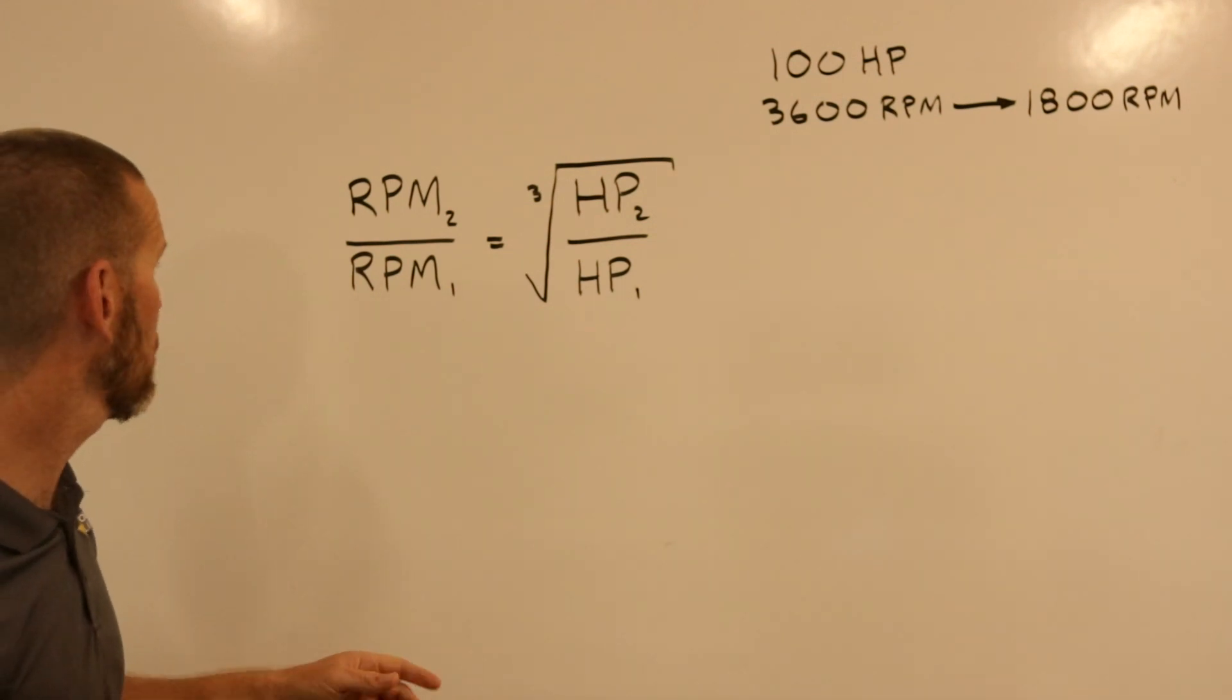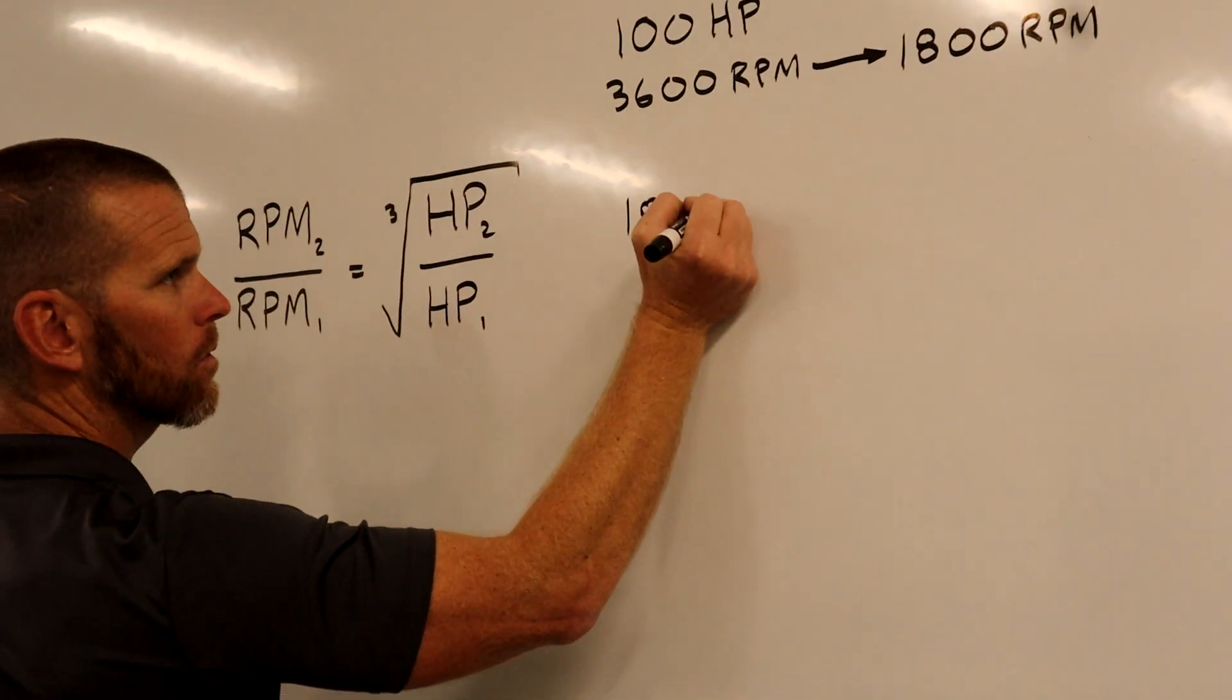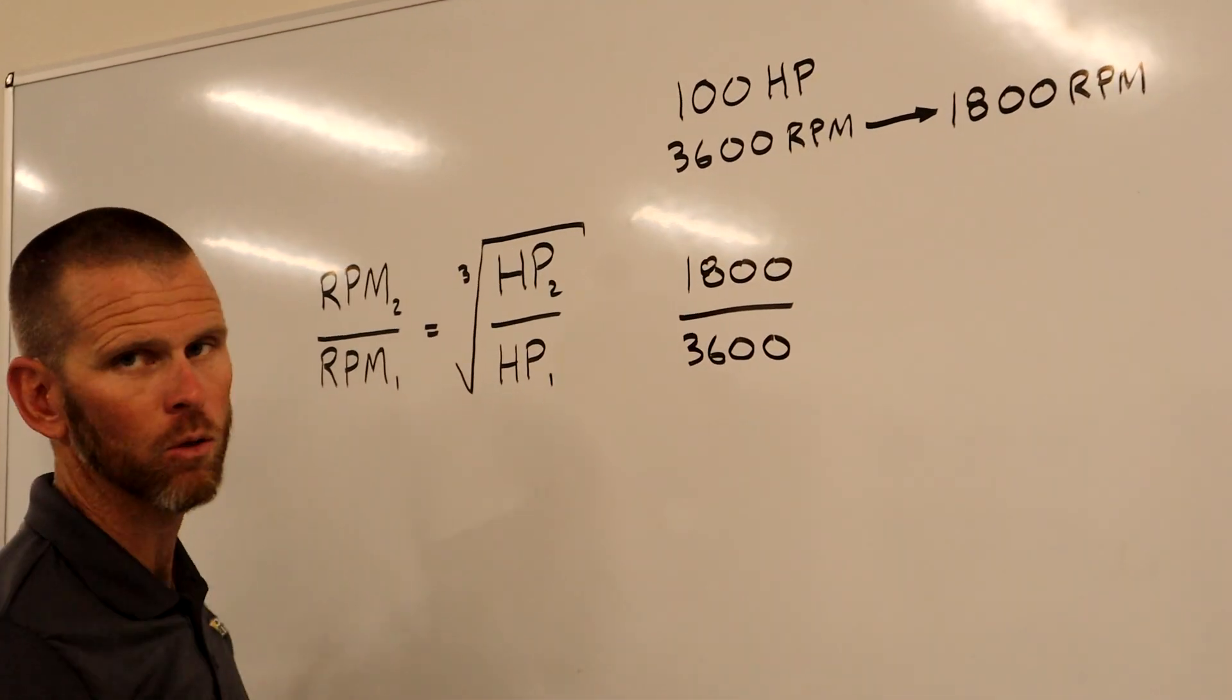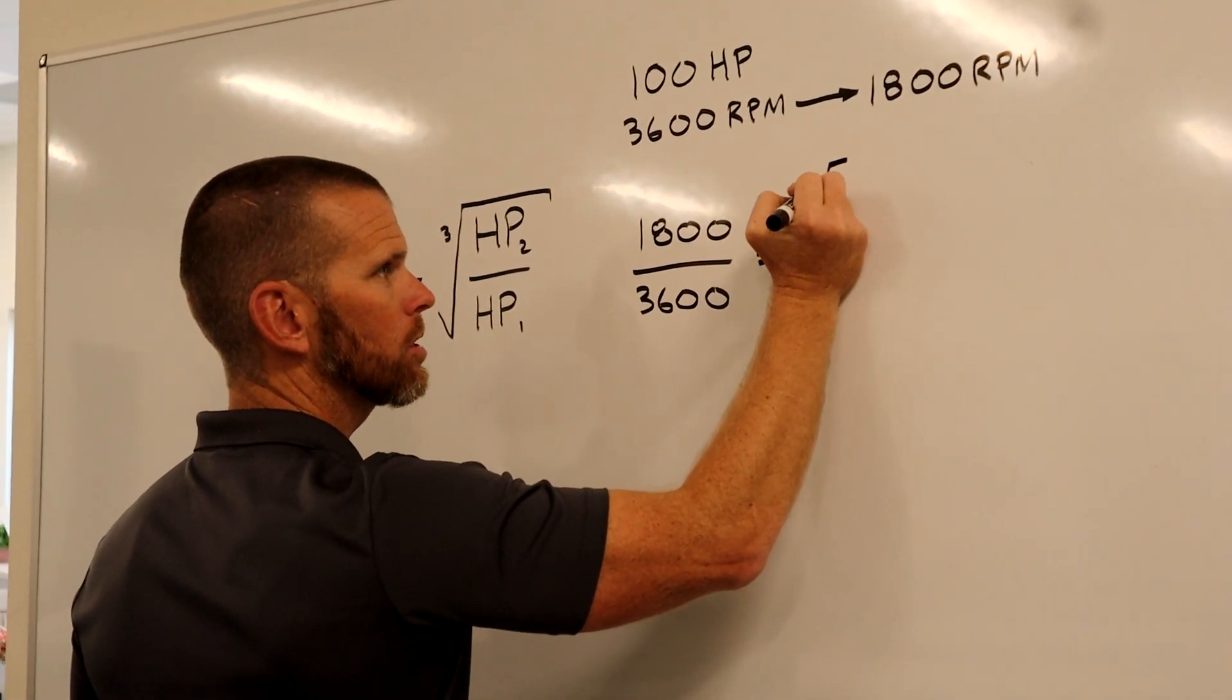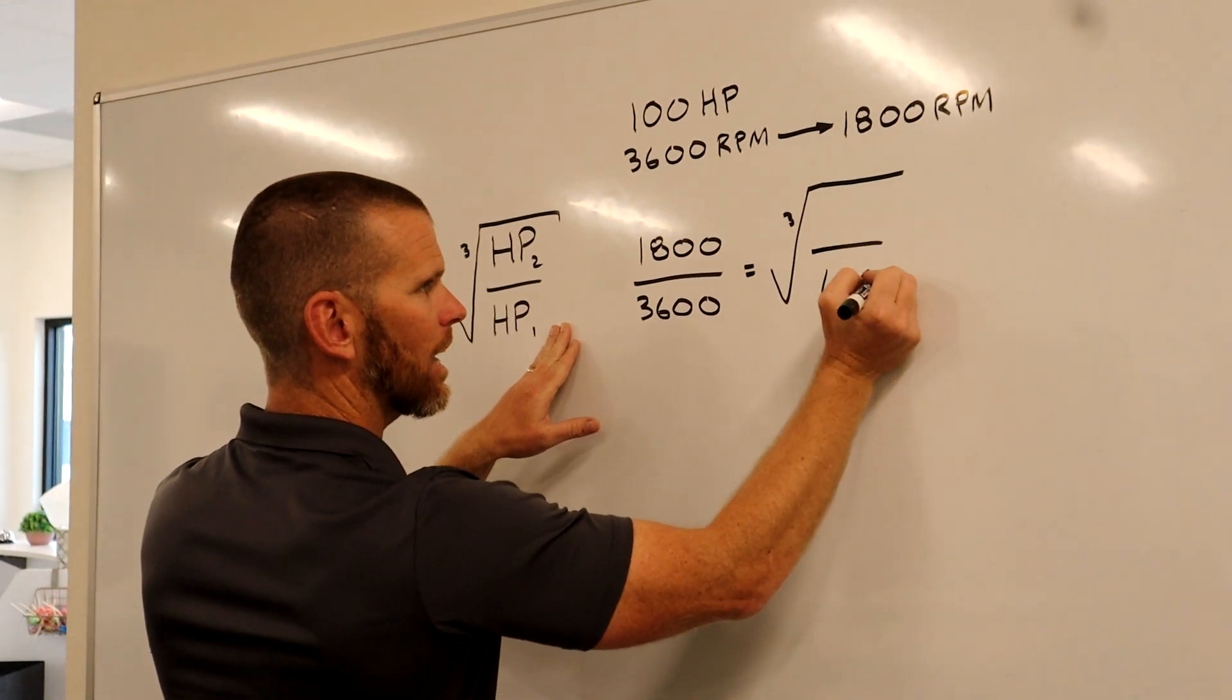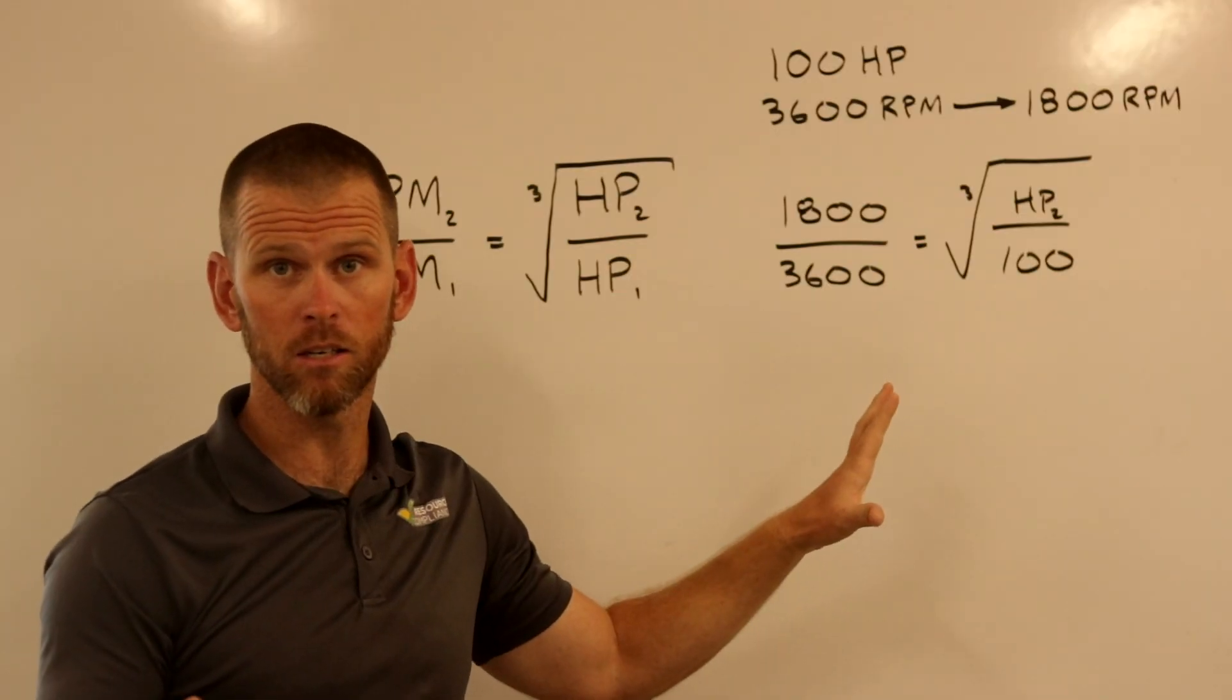We have our second RPM on the numerator, our first RPM on the denominator. These could be flipped. We can put the first up top and the second down low, so long as we do it on both sides in the same way. So let's go ahead and solve this problem. Our second RPM is given to us in the problem. It's 1800. And our first RPM, RPM one is 3600. Of course the units are RPM. They'll cancel out. And that's equal to the cube root of our horsepower at the beginning, which is a 100 horsepower compressor, and our horsepower at the end, which is horsepower two. That's what we don't know. Horsepower two is what we're wanting to solve. So we now have everything we need to solve this problem.